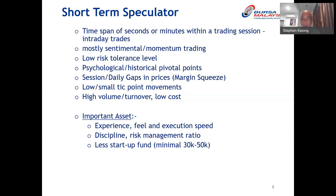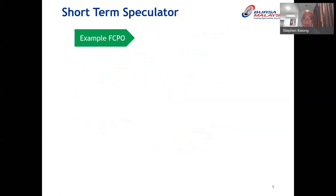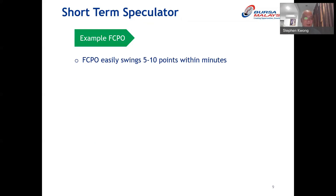At the end of this session there will be a slide on the performance of speculators within M Investment Bank so you can see what kind of expectations those traders can look at. For example, for those of you who know crude palm oil: KLCI in Bursa Malaysia easily swings 5 to 10 points within seconds or even minutes. It is very volatile. Also, between the bid and ask, the volume can easily absorb 5 to 10 contracts.